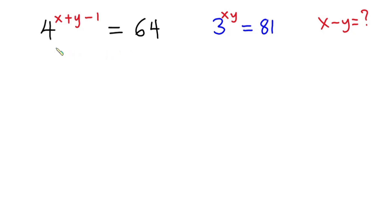Hello everyone. In this video we have these exponential equations: 4 to the power x plus y minus 1 is equal to 64, and we also have 3 to the power xy is equal to 81, and we have to find the value of x minus y.